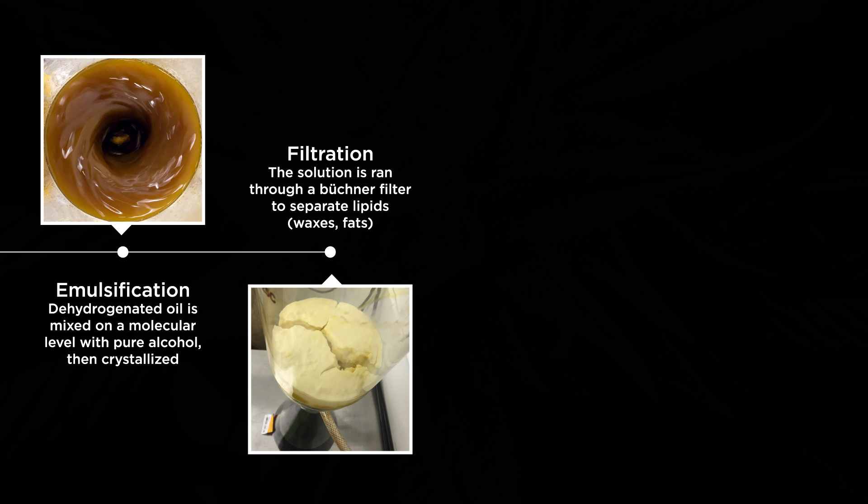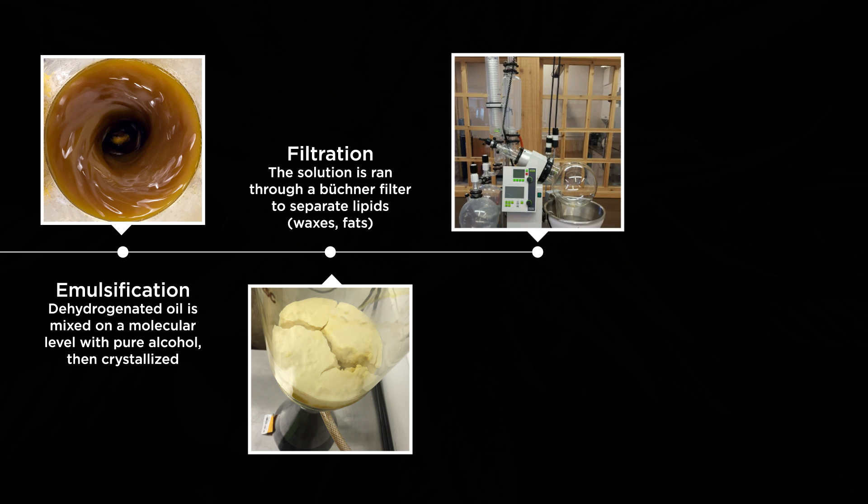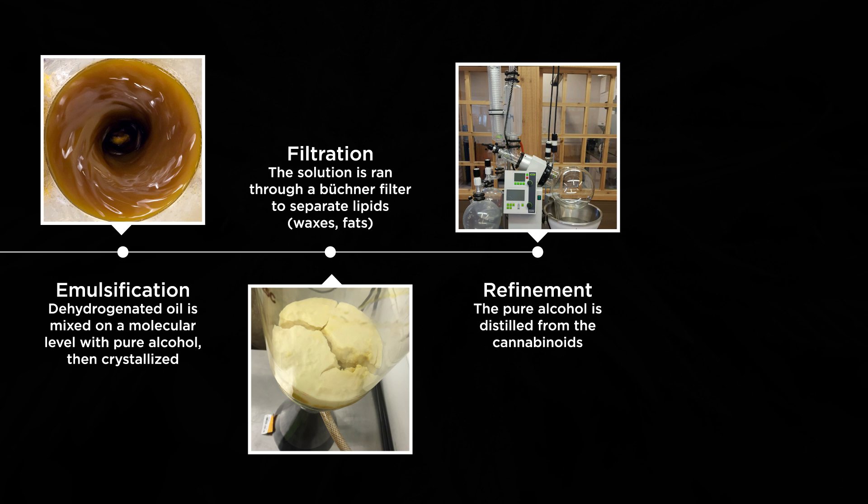During filtration, the crystallized oil is run through a Buechner filter to separate the lipids from the cannabinoids. The alcohol is then distilled from the cannabinoids, refining the cannabis oil.